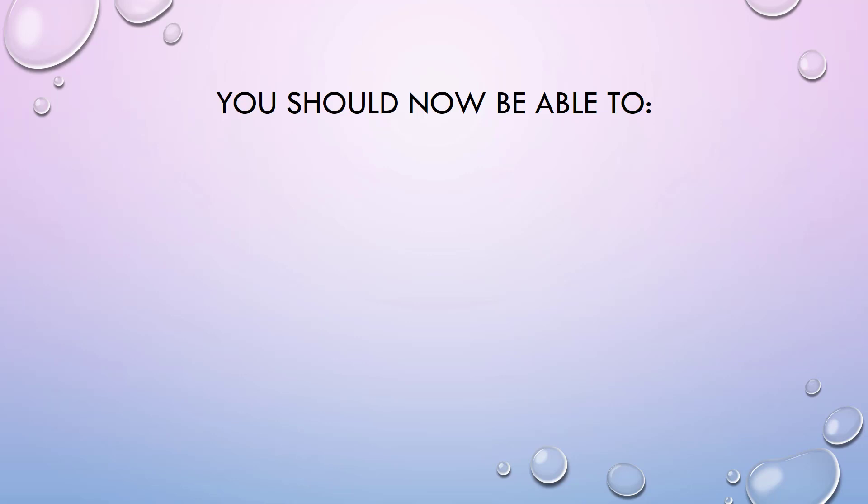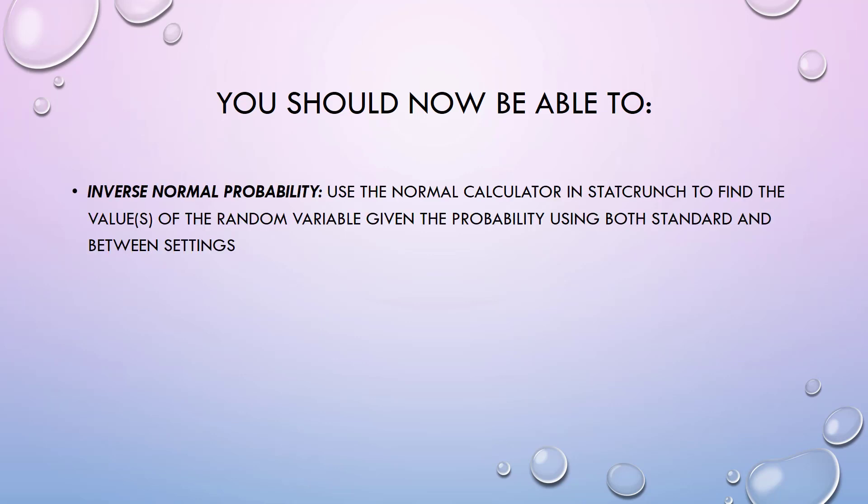Having watched this video, you should now be able to use the normal calculator in StatCrunch to find the value or values of a random variable given the probability using both standard and between settings, and use the notation z sub alpha.